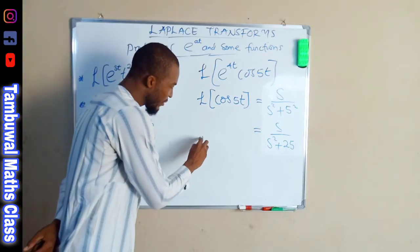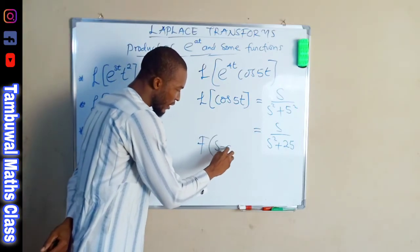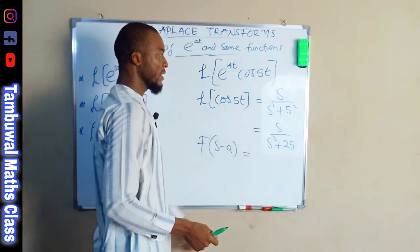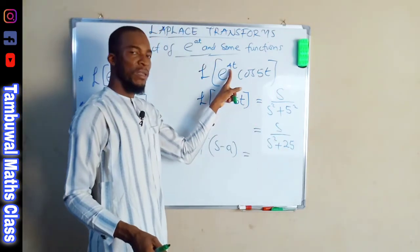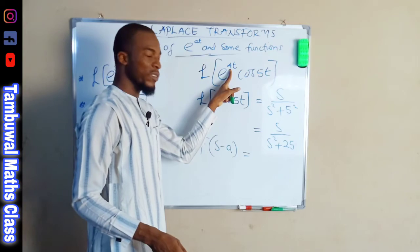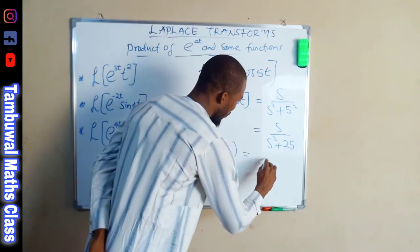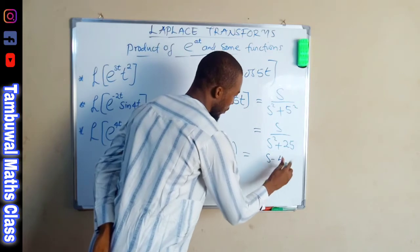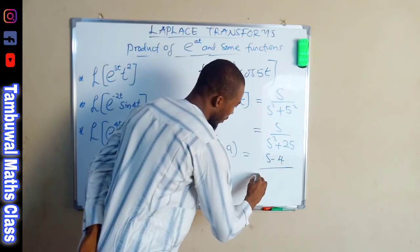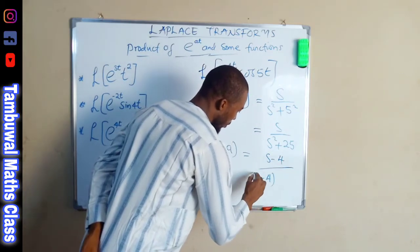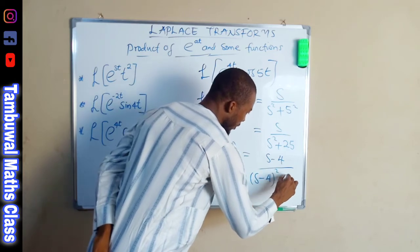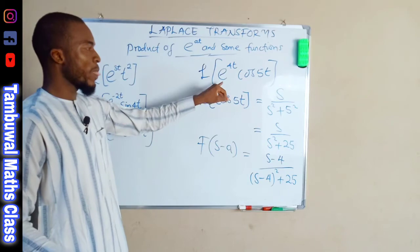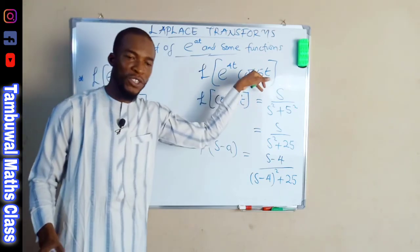To find the Laplace transform of the whole function, we replace s with s minus a, where a is the coefficient four. So we get (s minus four) divided by (s minus four) squared plus twenty-five. This is the Laplace transform of e^(4t) cos five t.